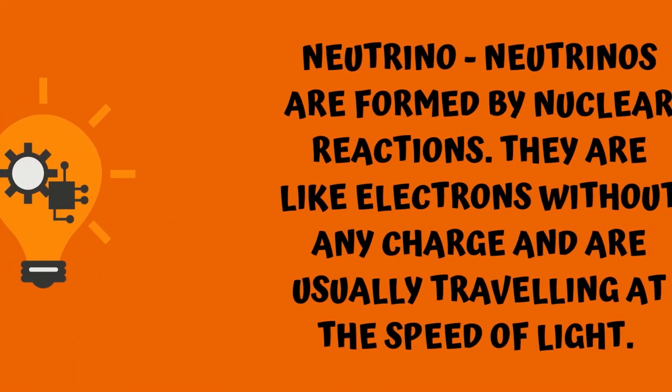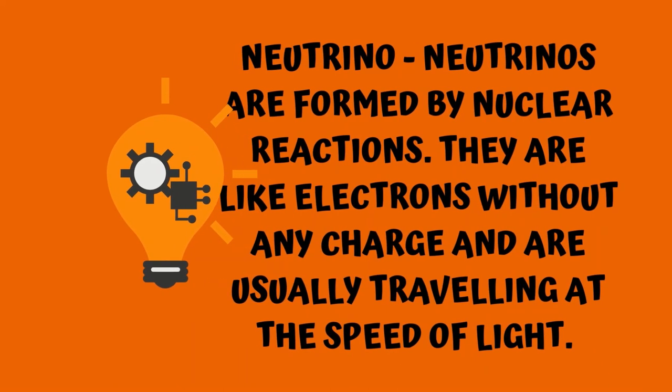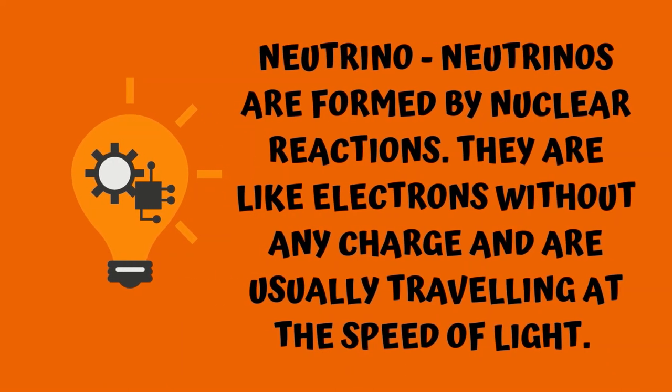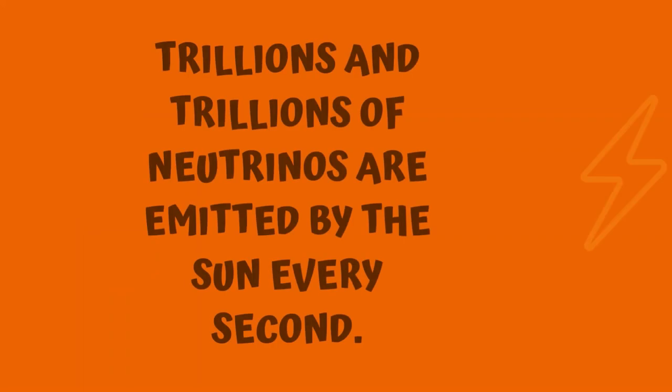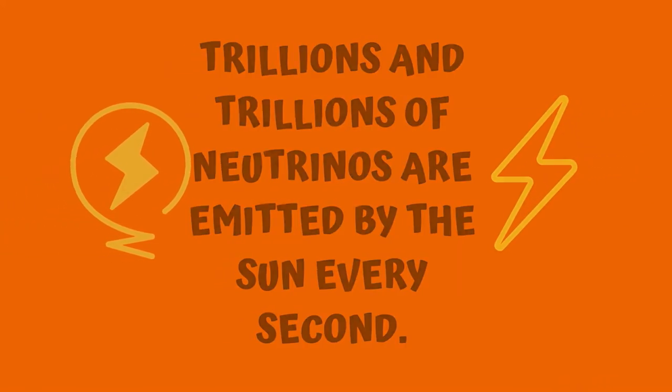Neutrino. Neutrinos are formed by nuclear reactions. They are like electrons without any charge and are usually traveling at the speed of light. Trillions and trillions of neutrinos are emitted by the Sun every second.